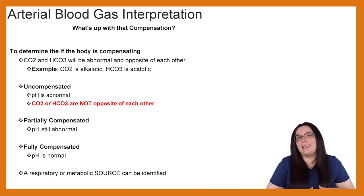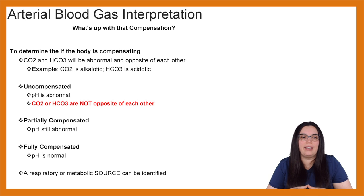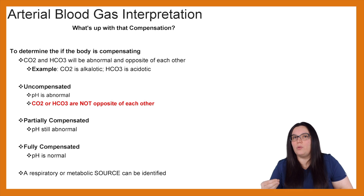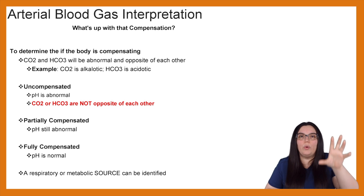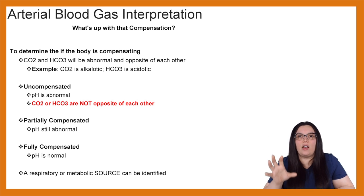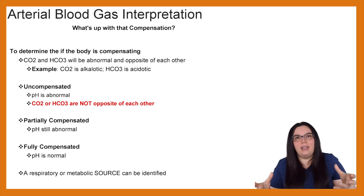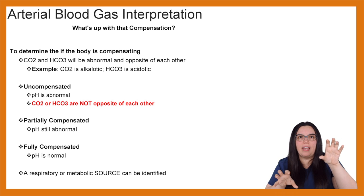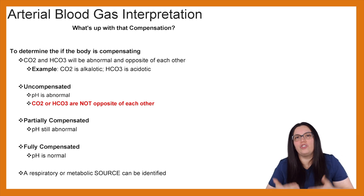We can break it down even further. For partially compensated arterial blood gases, the pH is still going to be abnormal. The metabolic and respiratory system is going to try to fix itself, but usually in the beginning of that, the pH is going to be abnormal. So when we have an abnormal pH but our carbon dioxide and our bicarb are opposite of each other, trying to fix each other, then we have a partially compensated arterial blood gas.